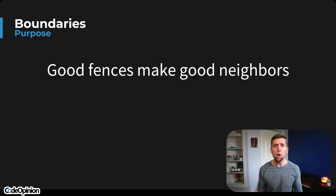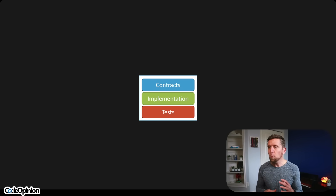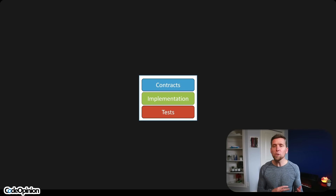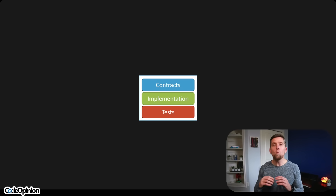Once you define your logical boundaries — those groupings of functionality — they're going to have to interact in some way. Let's define the code project structure from a development view. I have this broken down into three parts: contracts, implementation, and data. You can view these as projects, modules, or packages depending on your platform. Contracts is really your public API — the loosest form of coupling. It includes constructs like interfaces, delegates, function definitions, plain classes, or message schema definitions. This is what you're exposing from your logical boundary.